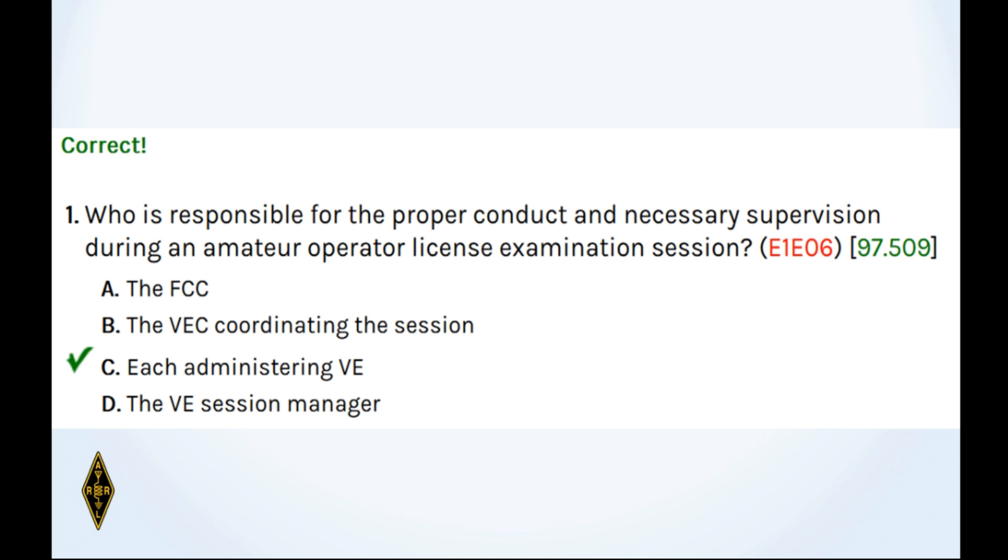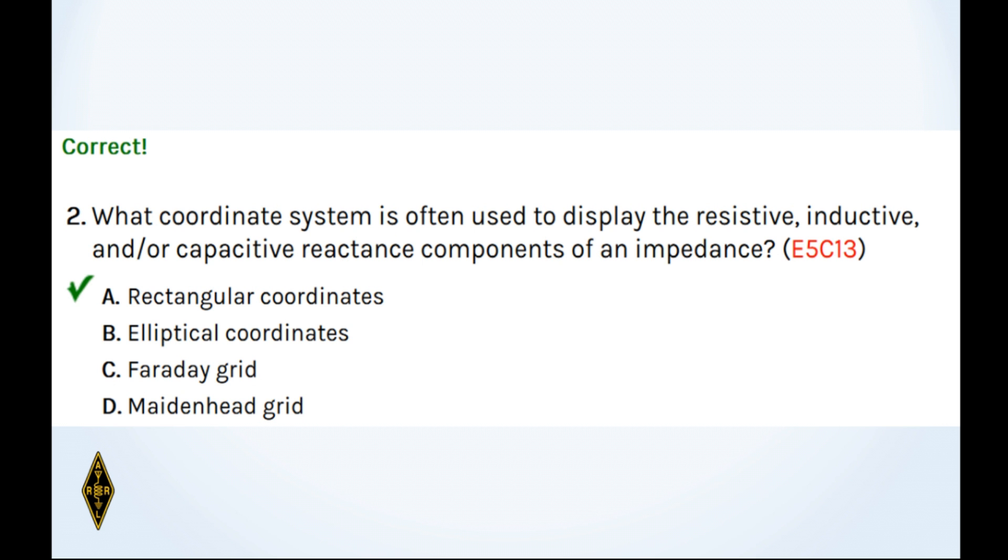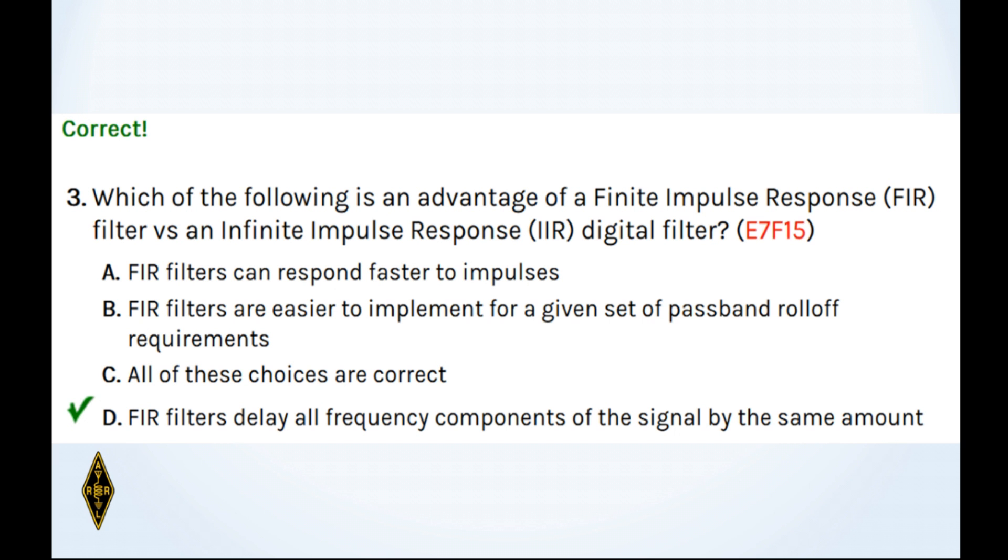2. What coordinate system is often used? That's the rectangular system. The opposite of that would be the polar system. So you can express complex impedances in either the rectangular or polar systems. 2A. 3. Which of the following is an advantage of a finite impulse response filter? Finite impulse response filters delay all frequency components of the signal by the same amount. So 3 delta.